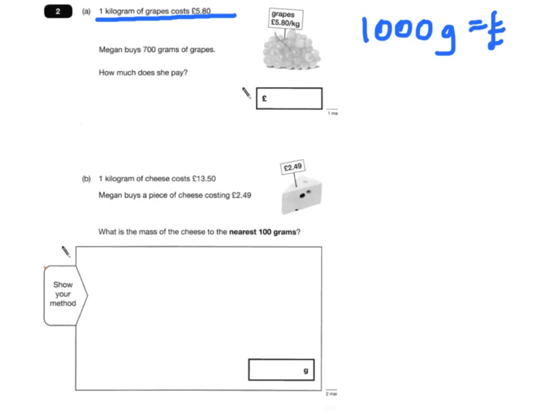You should know that that's a thousand grams. So a thousand grams is £5.80.